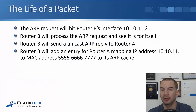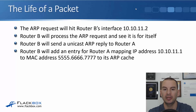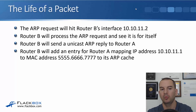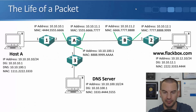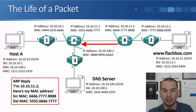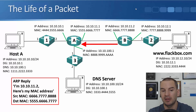The ARP request will hit Router B's interface at 10.10.11.2, and it will see that the ARP request is for itself. It will send a unicast ARP reply back to Router A. While doing that, Router B will add an entry for Router A, mapping IP address 10.10.11.1 to MAC address 5.6.7, to its ARP cache. The ARP reply says: I'm 10.10.11.2, here's my MAC address of 6.7.8, going to destination MAC 5.6.7.